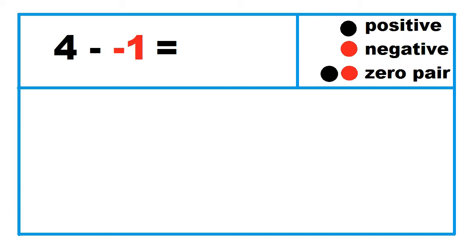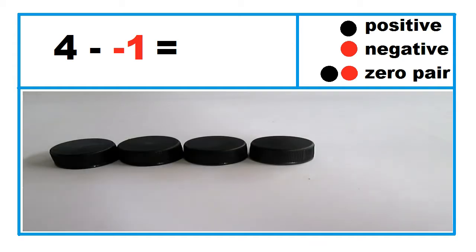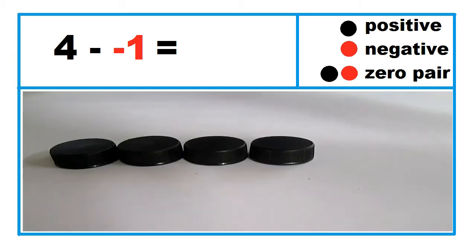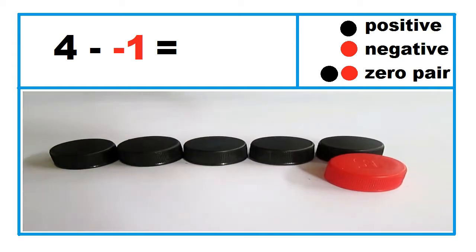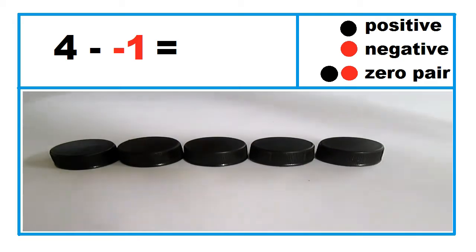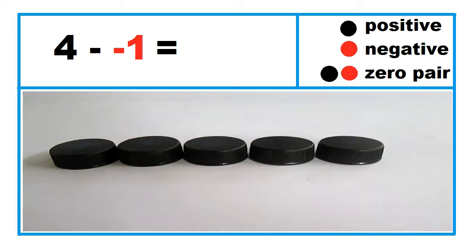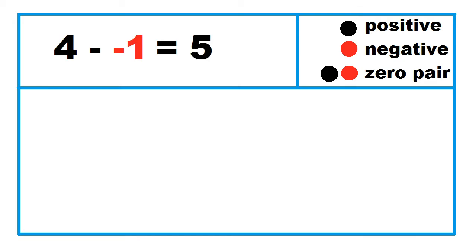Another example: 4 minus negative 1. Before you can take away one red cap from four black caps, introduce one zero pair, then take away one red cap. So, 4 minus negative 1 equals 5.